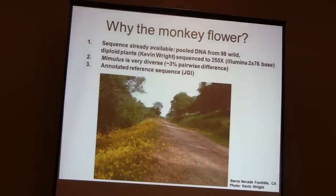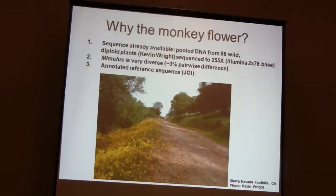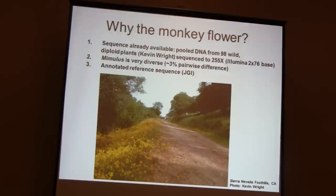So why pick the monkey flower for this? Part of it is very pragmatic. I already happen to have two billion reads of Illumina data from a pooled DNA sample from 98 wild diploid plants picked by Kevin Wright, formerly a grad student at John Willis's lab, now a post-doc at Harvard. These were picked for a project having to do with metal tolerance in Mimulus, and while we're waiting for that to mature, I hijacked the data for this project in the meantime.